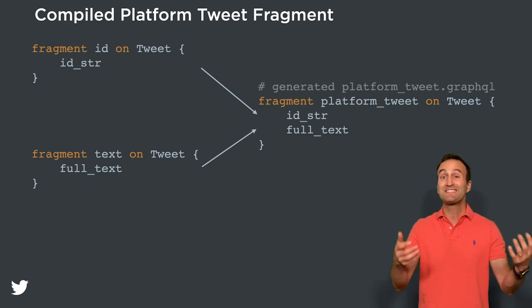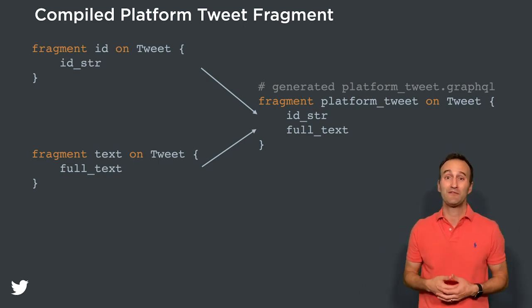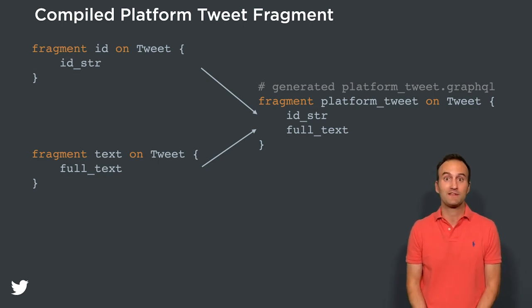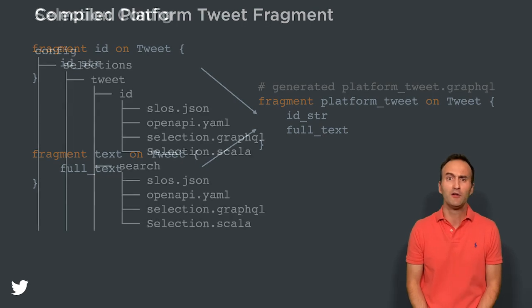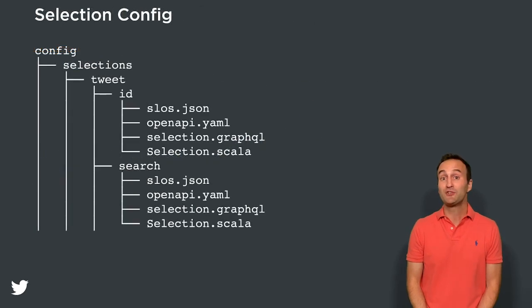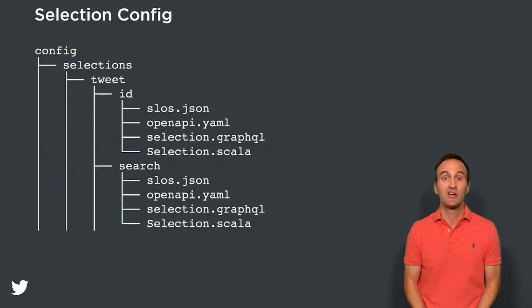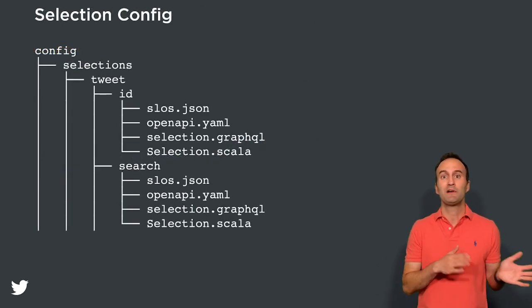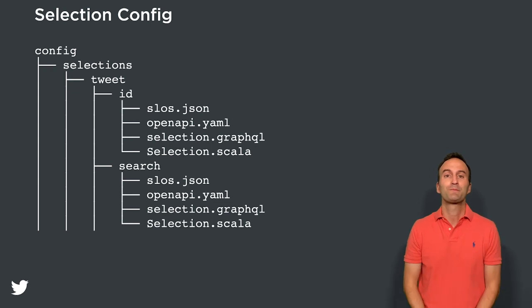Next, let's look at how we configure selections. Recall that selections are how resources are found in our APIs. For this example, we'll implement two selections: tweet by ID and tweet by search.